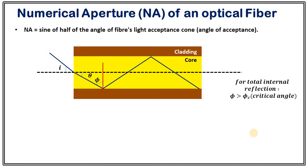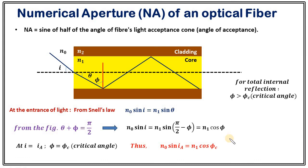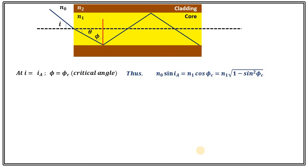We start with the same picture. Phi has to be greater than the critical angle in order for light to propagate through the optical core. Applying the law of refraction at the interface of core and outside medium, from Snell's law: n0 * sin(i) = n1 * sin(theta). Substituting theta as pi/2 minus phi — because theta plus phi equals pi/2 — we get n0 * sin(i) = n1 * cos(phi). To find sine of i_a, we set i = i_a, and at the acceptance angle phi equals the critical angle phi_c, giving n0 * sin(i_a) = n1 * cos(phi_c).